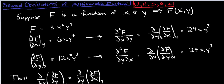So let's suppose we have a function f that is a function of x and y, where x and y are the independent variables. Let's use a concrete example: suppose that f is equal to 3x squared y to the fourth. What we're ultimately going to do is take the derivative of this function with respect to x and also with respect to y, then take the second derivative and equate them.